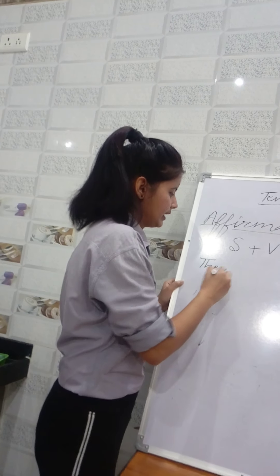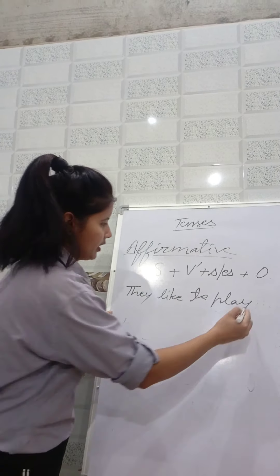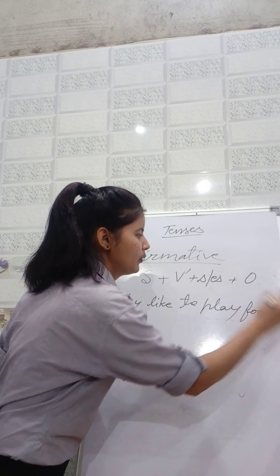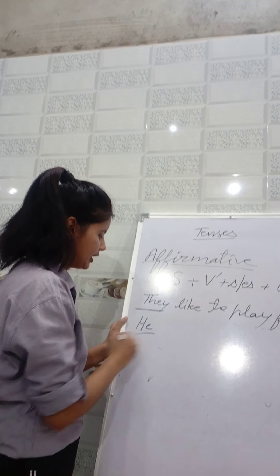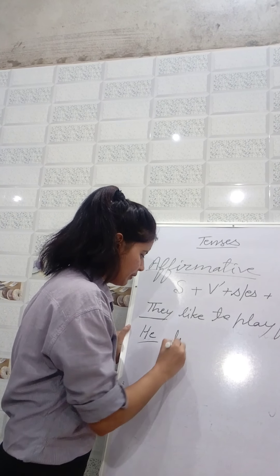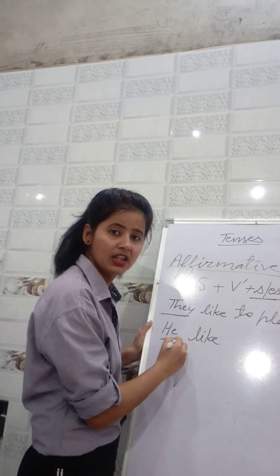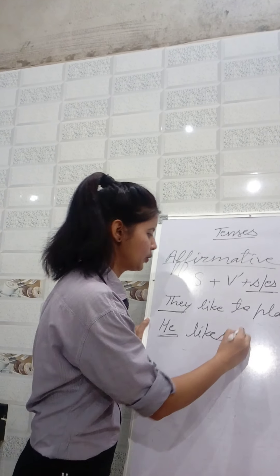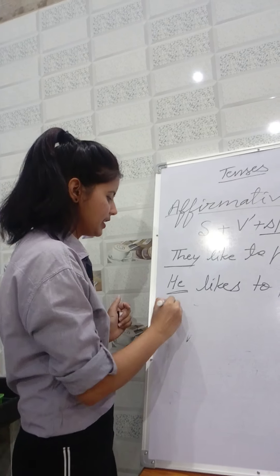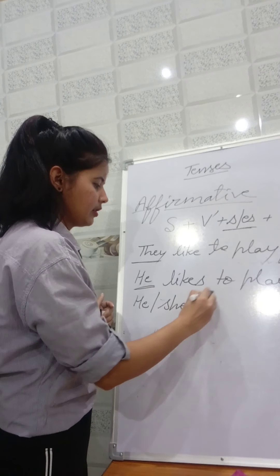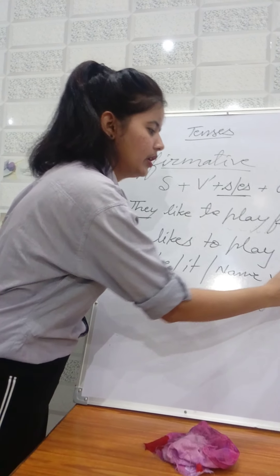If the subject is he, she, it, or anyone's name — a singular subject — then you have to add S or ES to the verb. The question is: how do you know whether to add S or ES? If the verb ends in O, CH, SH, X, or SS, then you add ES. If the verb doesn't end in these, you simply add S. But remember, these suffixes are added only when the subject is singular.